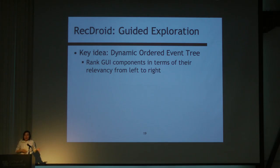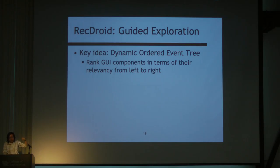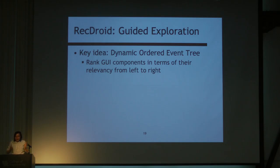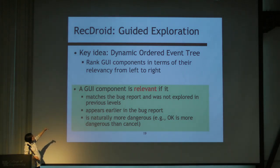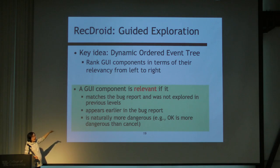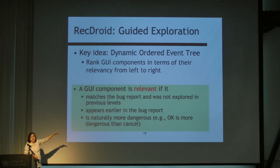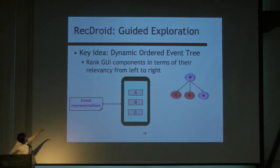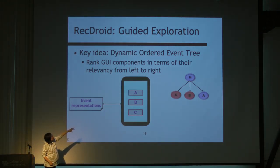The key idea is using a dynamic order tree to guide the solution. Each node in the tree is a UI component, and the edge represents an event — the transition from one screen to another by exercising that component. We call this tree a dynamic order tree because it is dynamically built during runtime, and the nodes are ordered according to their relevance to the bug report in descending order. A component is considered relevant if it matches the bug report step, has been seen before, and appears earlier in the bug report. We also use a heuristic based on the frequency of a component's appearance in the bug report.